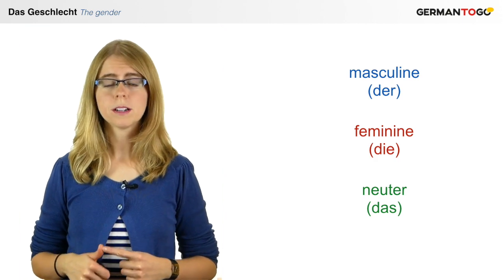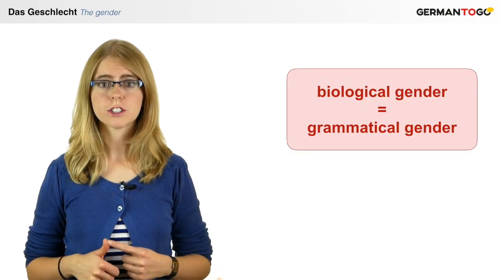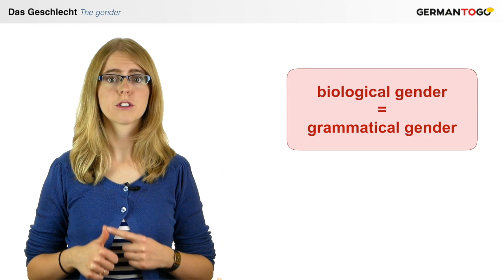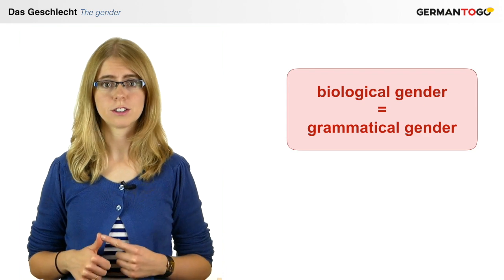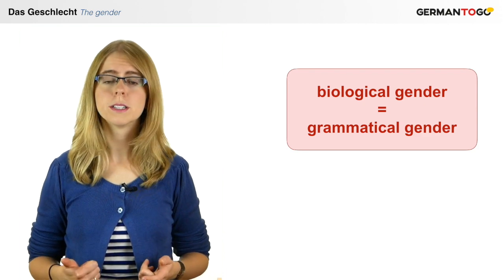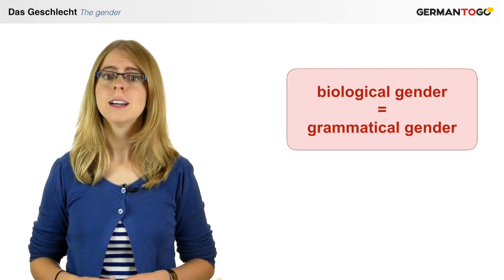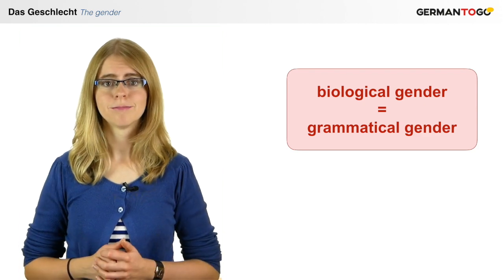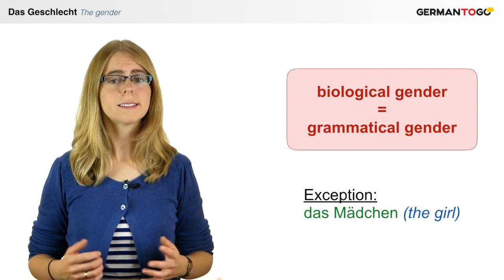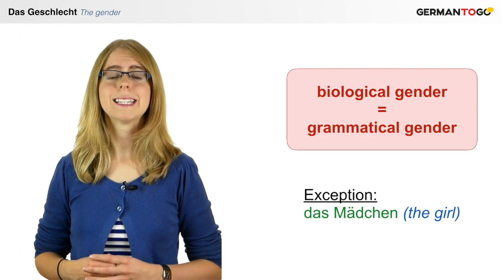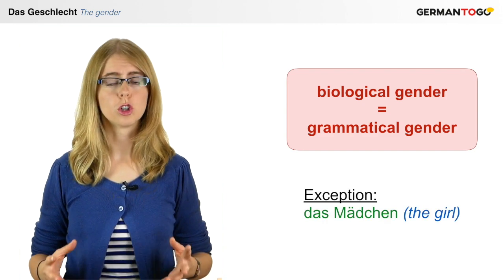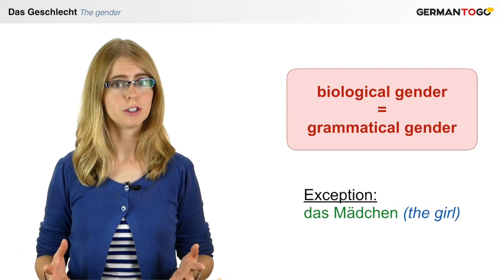First, for people, the biological gender usually corresponds to the grammatical gender, so all women are feminine and all men are masculine. One exception is das Mädchen — the girl — which is neuter.